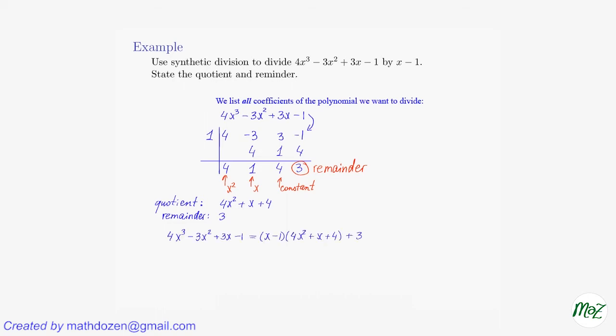And we can again write the original polynomial as equal to (x minus 1) times (4x squared plus x plus 4) plus 3.